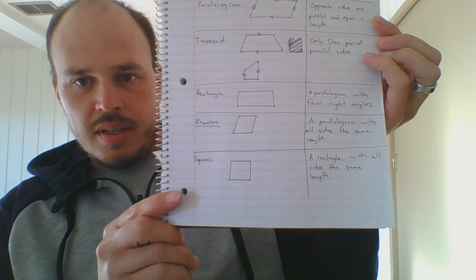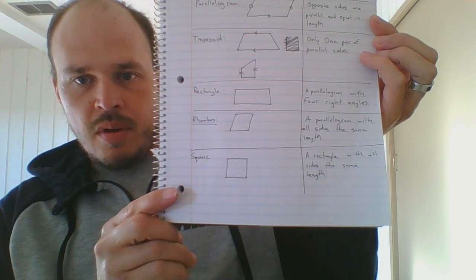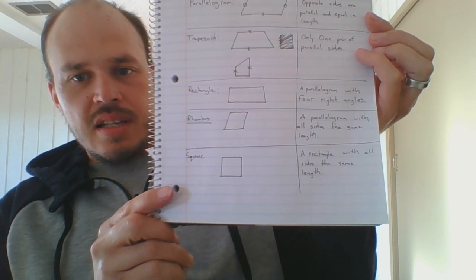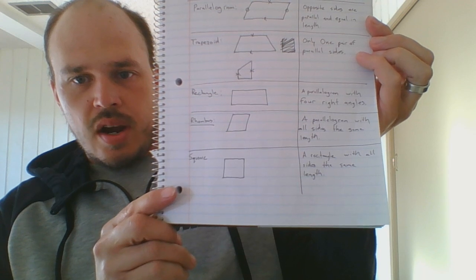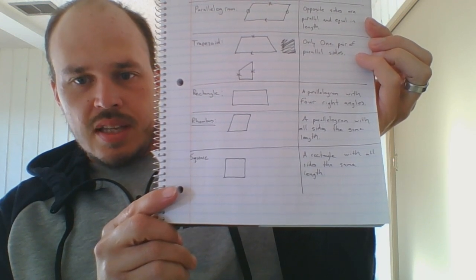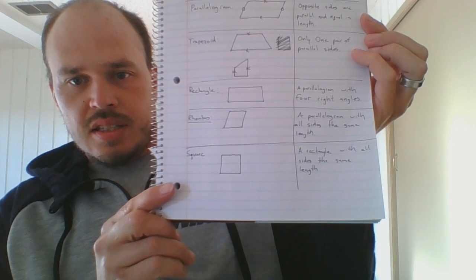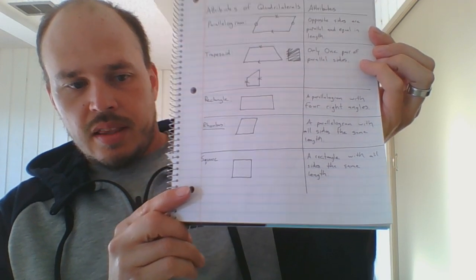And then a rhombus, that is a parallelogram where all sides are the same length. But it doesn't have to have 90 degree angles. That's a rhombus. And then a square is a rectangle with all sides the same length. There you can see the square right there.